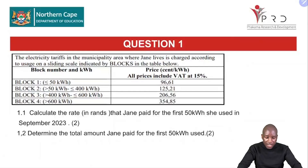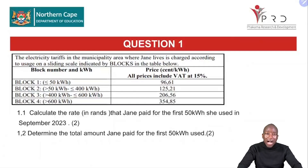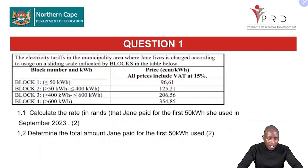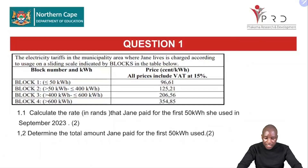Let's start with Question 1, which is on Tariffs. Let's look at the question together and understand what it's about. Looking at our table, it says the electricity tariffs in the municipality area where Jane lives are charged according to usage on a sliding scale indicated by blocks in the table. We've got blocks 1 to 4, and each block is given its price in cents per kilowatt hour. All prices include VAT at 15%.